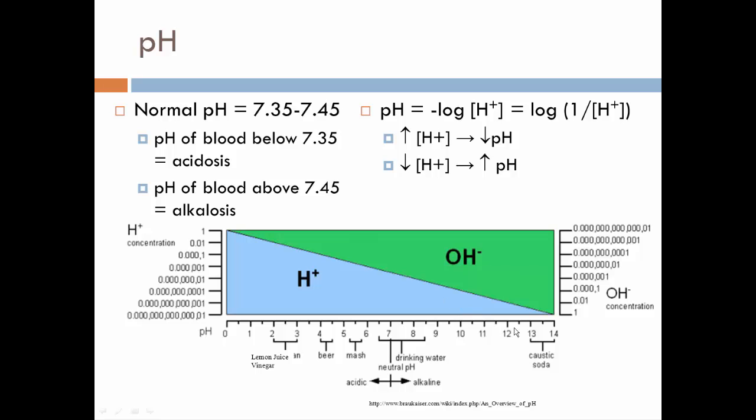The negative just makes that into an inverse relationship, so that with decreasing pH, you have increasing hydrogen ion concentrations.